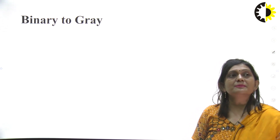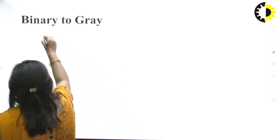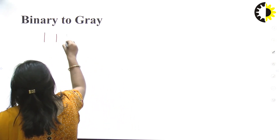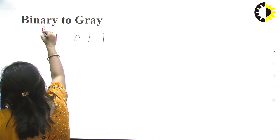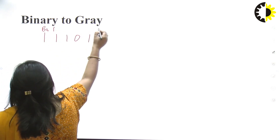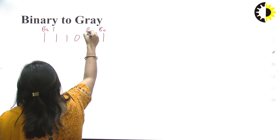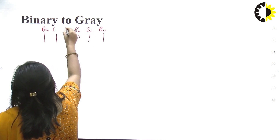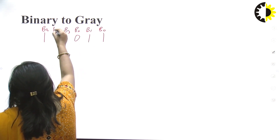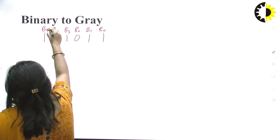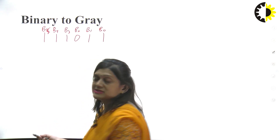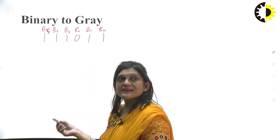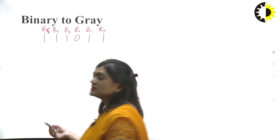First, we will see how we can convert a binary number into gray code. I have a binary number 11011. This is B0, B1, B2, B3, B4, and B5. B5 is the MSB and B0 is the LSB. We have to convert it into gray code.